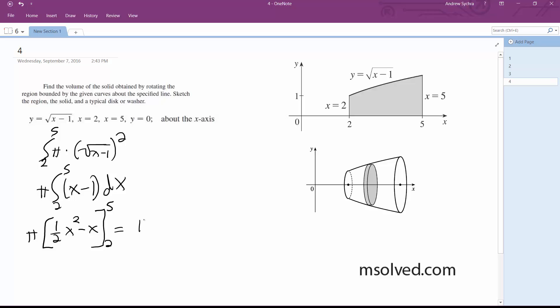This ends up being equal to pi times 25 over 2, minus 5, minus 4 over 2, plus 2. Finally, what we end up with for volume is equal to 15 over 2 pi for the exact amount.